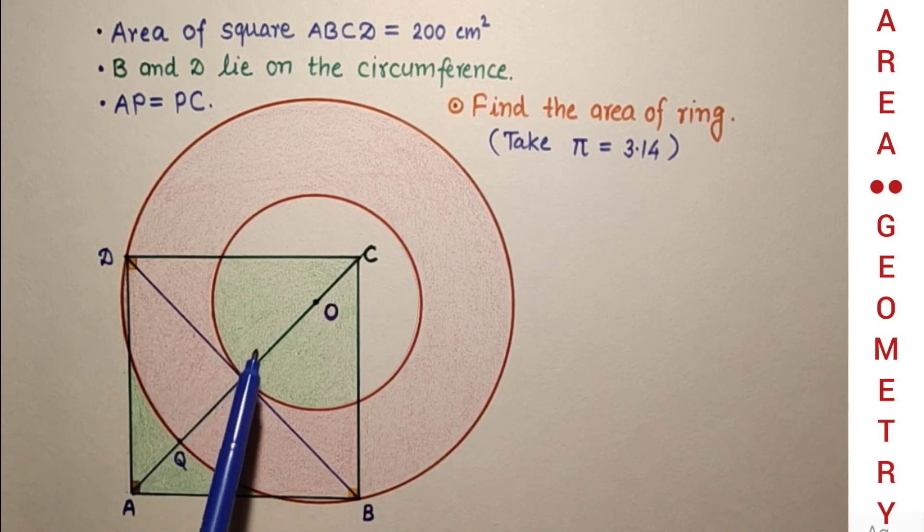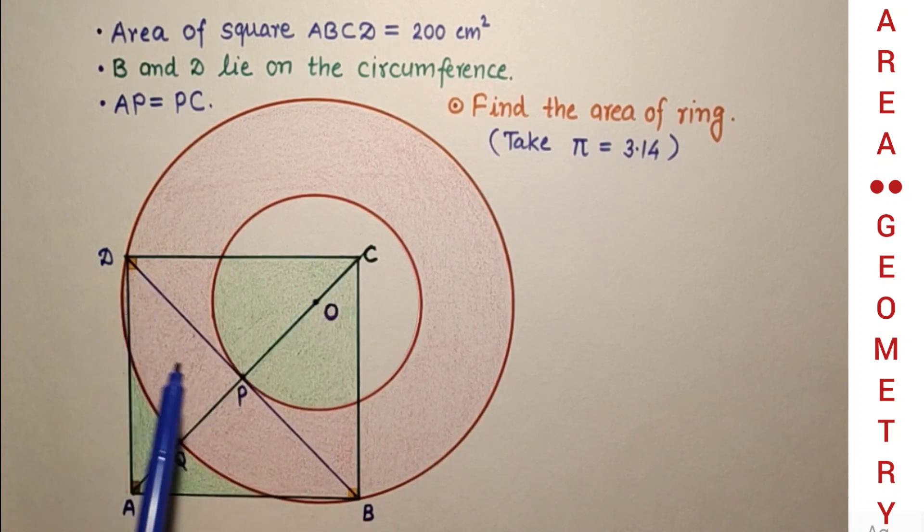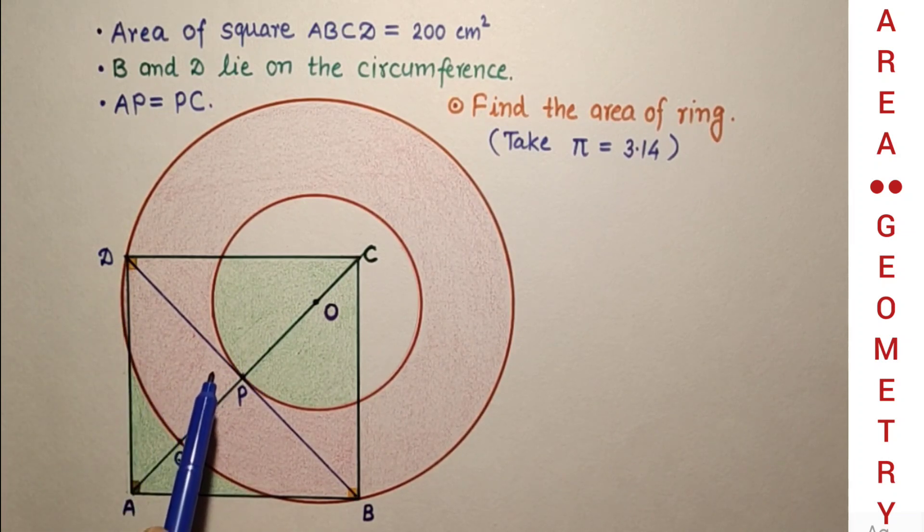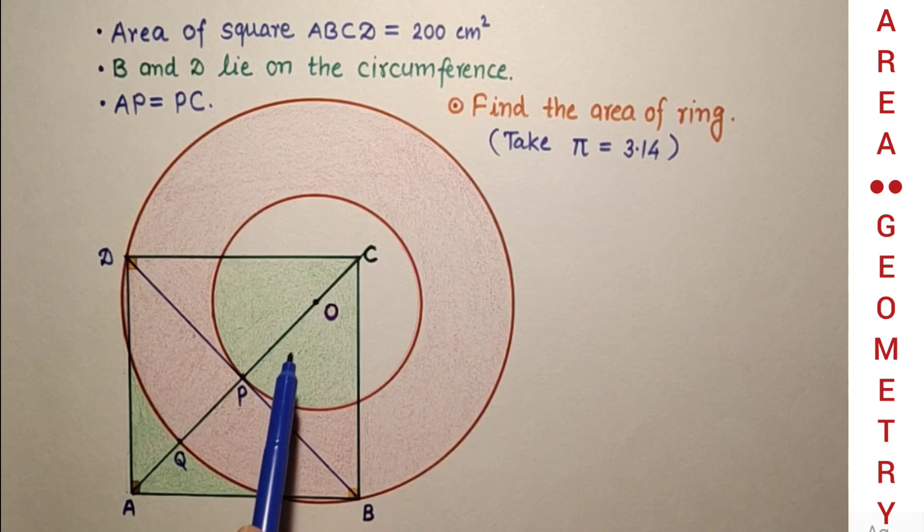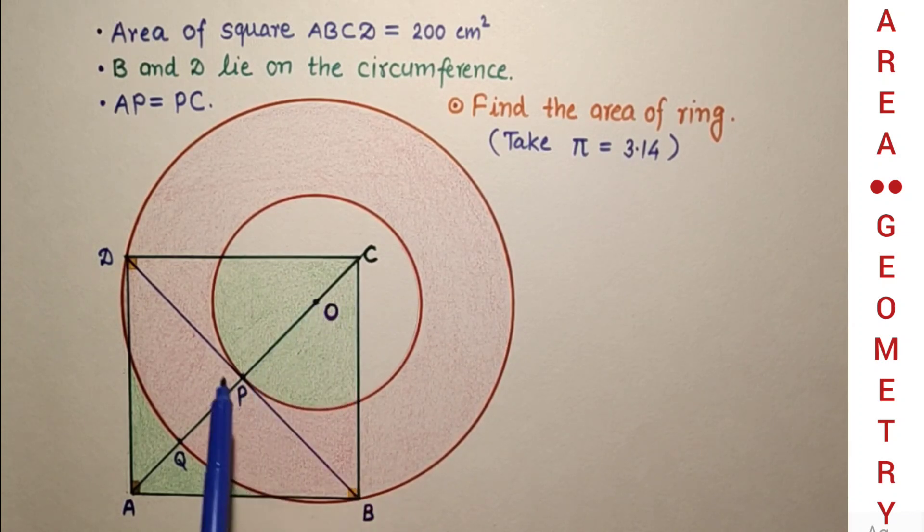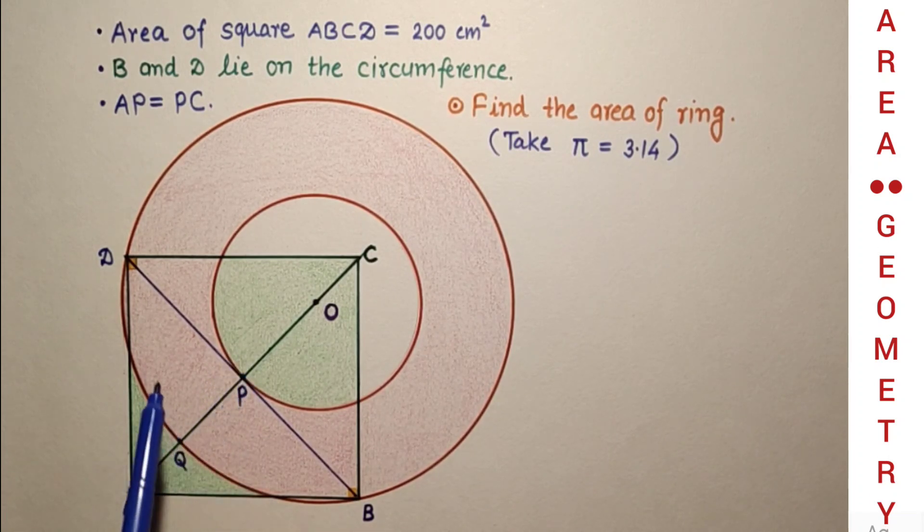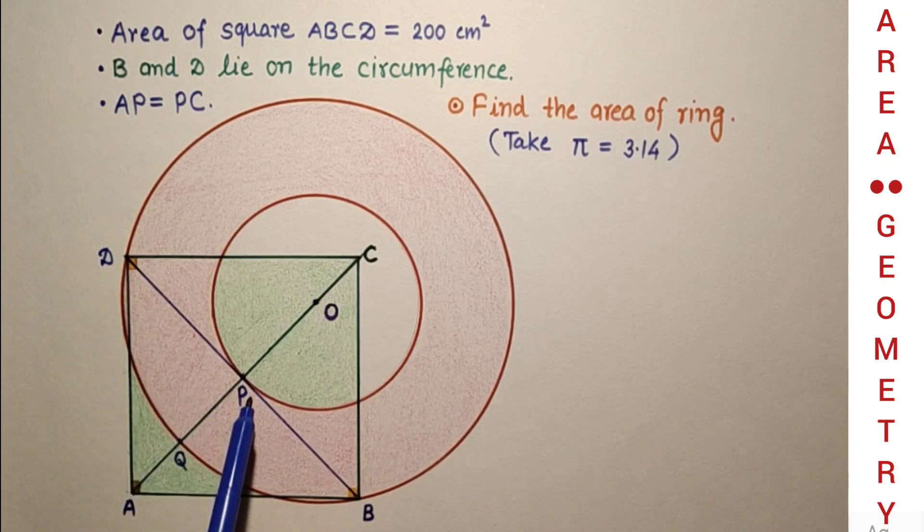Since this is 45, this is 45, and this is 90, DP is perpendicular to PC. This OP is radius, and radius and tangent at the point of contact will be perpendicular. It means DP is tangent and touches at point P.